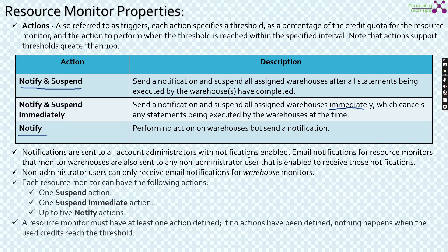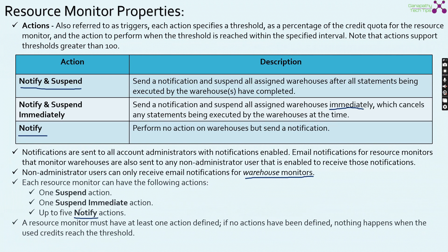Notifications are sent to all account administrators with notifications enabled. Email notifications for resource monitors that monitor warehouses are also sent to any non-administrator user that is enabled to receive notifications. Non-administrator users can only receive email notifications for warehouse monitors — they cannot receive notifications for account monitors. Each resource monitor can have: one suspend action, one suspend immediate action, and up to five notify actions. A resource monitor must have at least one action defined; if no action has been defined, nothing happens when the used credits reach the threshold.